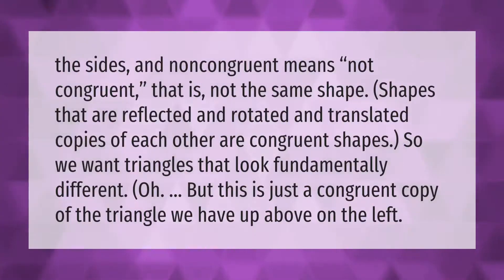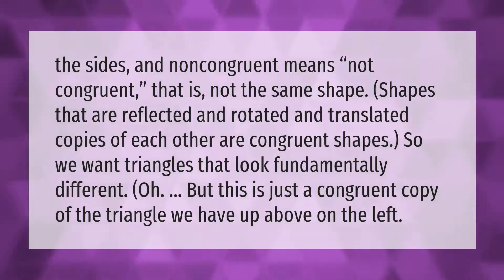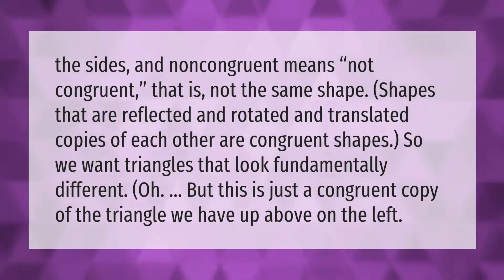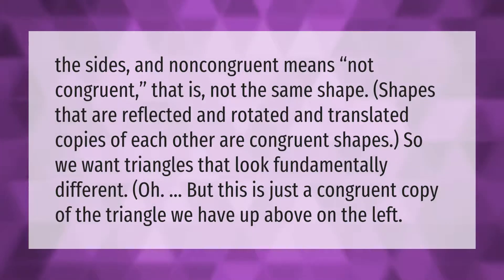Non-congruent means not congruent — that is, not the same shape. Shapes that are reflected, rotated, and translated copies of each other are congruent shapes. So we want triangles that look fundamentally different, but this is just a congruent copy of the triangle we have up above on the left.